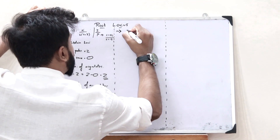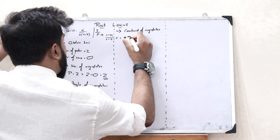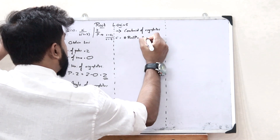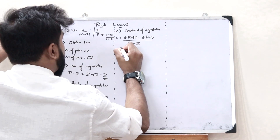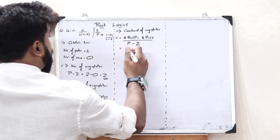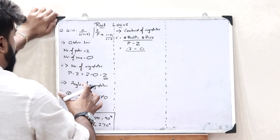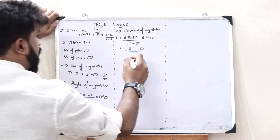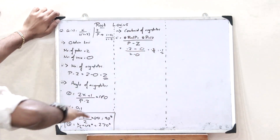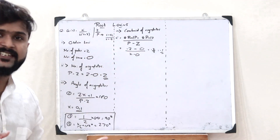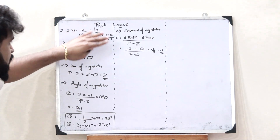In Step 4 we find the centroid of the asymptotes. The centroid is given by the summation of all real values of the poles minus the summation of all real values of the zeros, divided by P minus Z. Here the sum of poles is -2+0 = -2, minus the sum of zeros which is 0, divided by 2-0 = 2. So the centroid is -2/2 = -1.